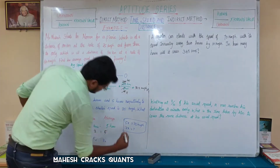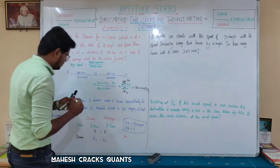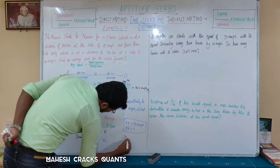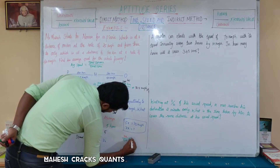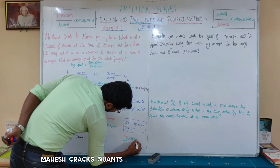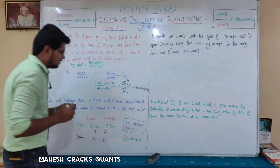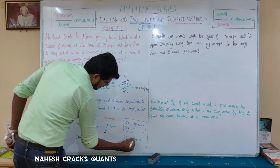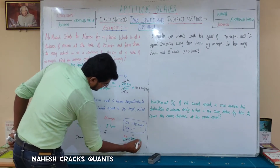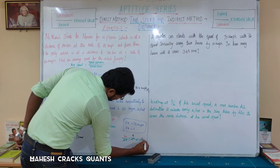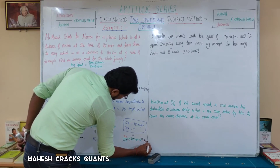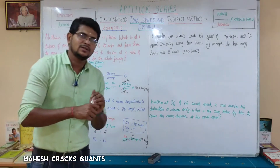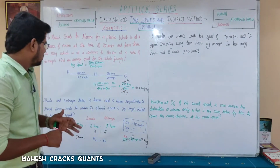So 5x equals 35 km per hour. Dividing, x equals 7. Therefore Abinaya's speed is 3x, which is 3 times 7 equals 21 km per hour. Abinaya's speed is 21 km per hour to cover from O to Salem.